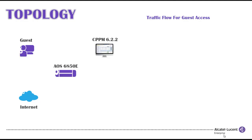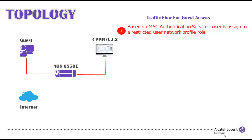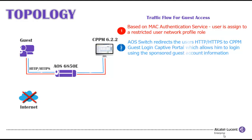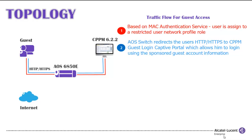Traffic Flow for Guest Access: When a guest user is connected to the Alcatel Lucent Switch, based on MAC Authentication Service, the user is assigned to a restricted user network profile role. When a guest user opens up a browser and tries to go to the Internet, the AOS Switch redirects the HTTP or HTTPS traffic to CPPM Captive Portal Authentication Service, which allows the user to log in using the sponsored guest account information.